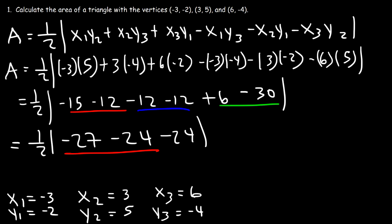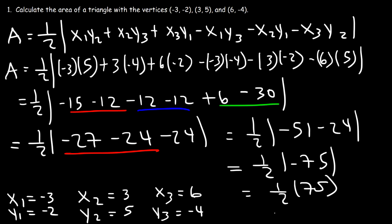Negative 27 minus 24, that's negative 51. And negative 51 minus 24, that's negative 75. The absolute value of negative 75 is positive 75. So the final answer, you can write it as 75 over 2, or if you want the decimal answer, it's 37.5.